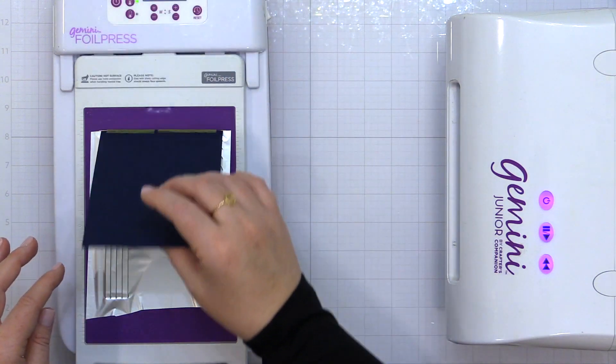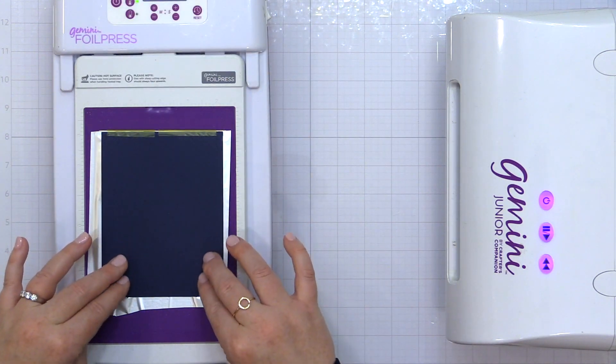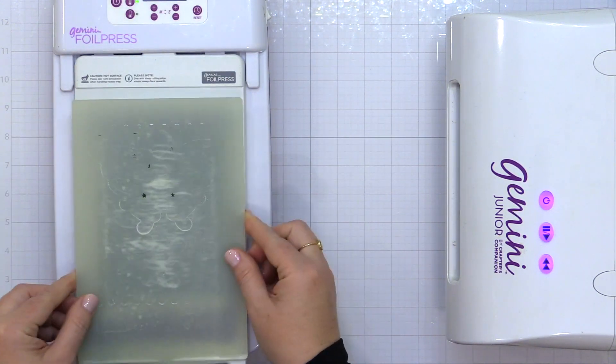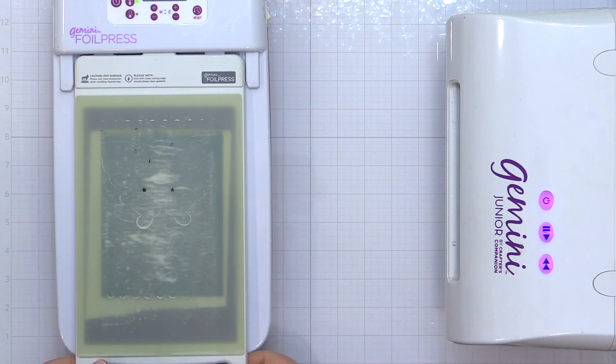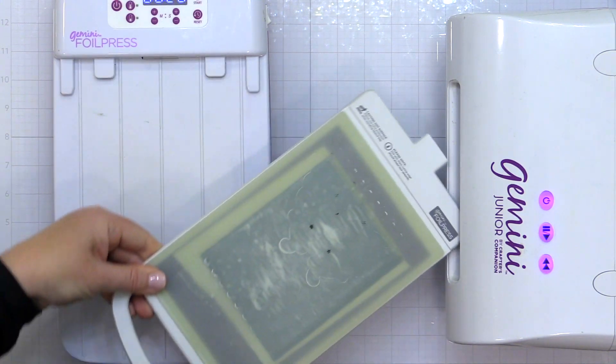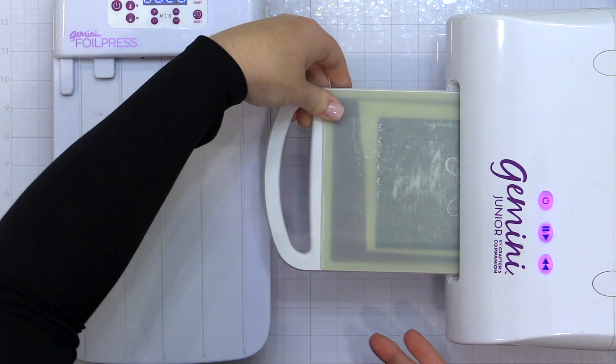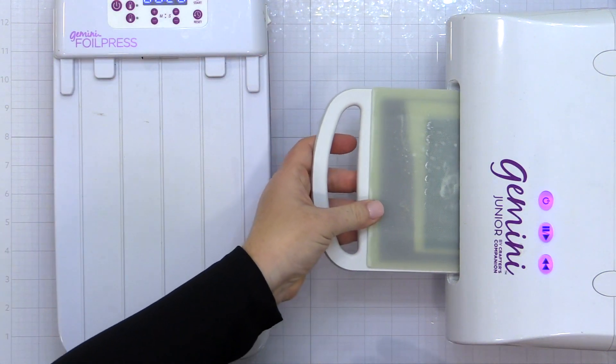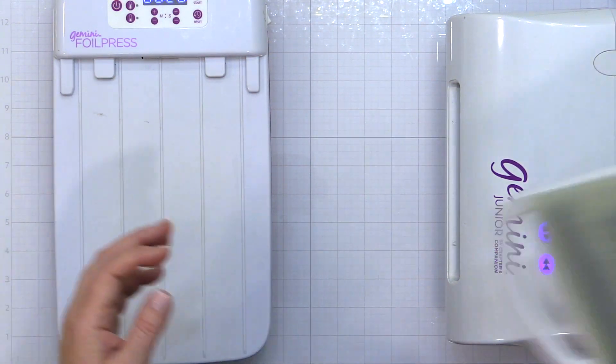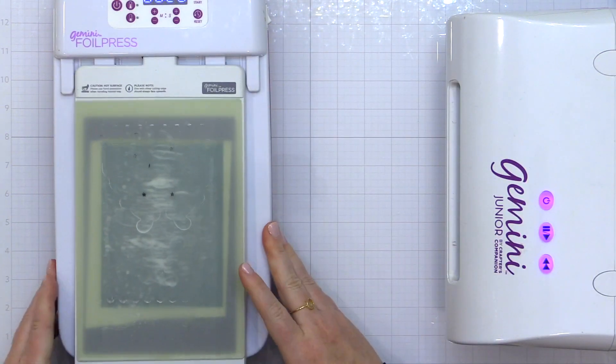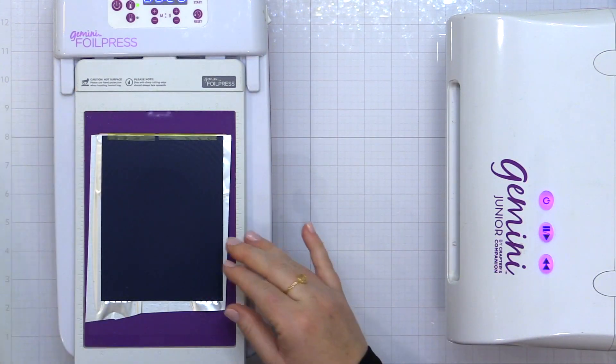Now I'm going to open this up. I'm not moving anything and I saw that I did not get the foiled result that I wanted. So I just closed that book right back up, gave it a couple seconds, ran it back through my Gemini Junior, and those areas where I hadn't gotten enough heat and pressure before, they foiled beautifully.